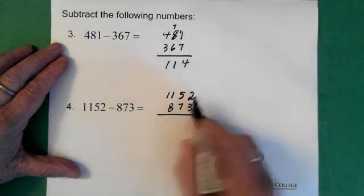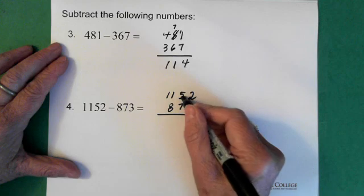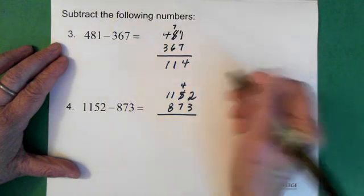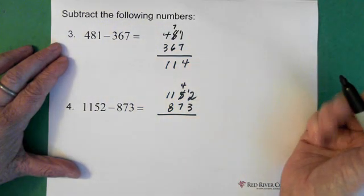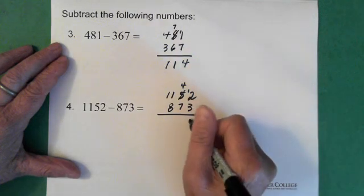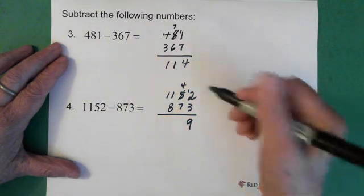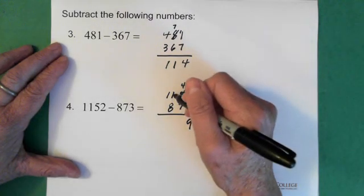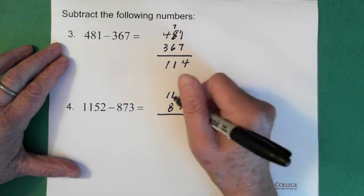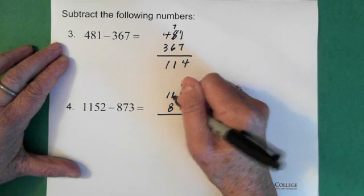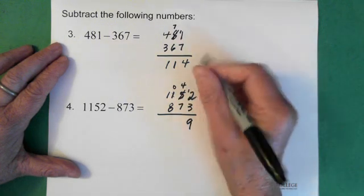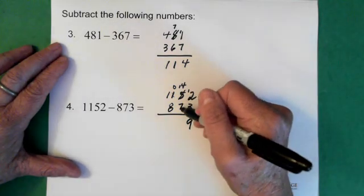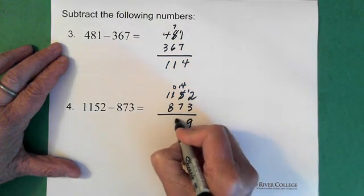So 2 minus 3 we can't do. So we borrow from the 50, we borrow from the 5 here. This becomes a 4, and we put a 1 in front of the 2. 12 minus 3 is 9. 4 minus 7 we can't do. So we borrow from the 1. And so this is 100, but we borrow from it. This becomes a 0, and we put a 1 in front of the 4. So now we have 14 minus 7, which is 7.